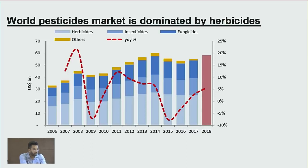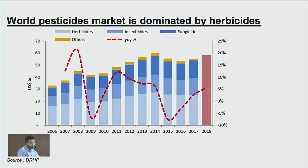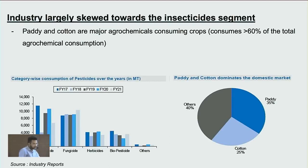Looking at the global breakup of agrochemical types, herbicides account for close to 50% of usage, followed by fungicides at 27% and insecticides at 25%. However, in India, insecticides have a larger consumption compared to herbicides. The reason is that weed control in India has traditionally relied on cheap labor rather than herbicides. But as labor costs rise, herbicides are seeing strong growth. Paddy and cotton dominate the domestic market, accounting for roughly 60% of agrochemicals used.